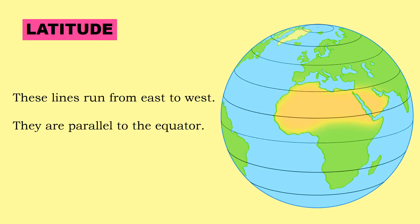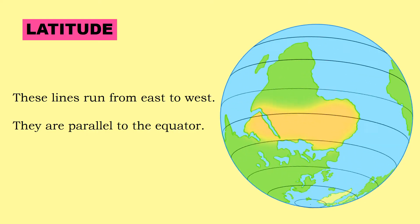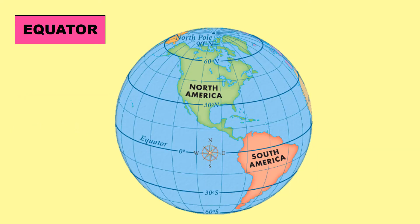Lines of latitude. These are horizontal lines. They run from east to west. Lines of latitude are parallel to each other.